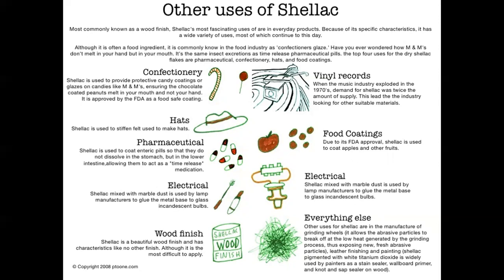In confectionery, shellac is used to provide a protective coating for candies and glazes — M&Ms are coated with it so they don't melt in your hand. Cowboy hats are also covered with shellac material because it gives a stiffened look and maintains the specific shape. In pharmaceuticals, shellac is used for coating enteric pills so that they do not dissolve in the stomach but in the lower intestine. In electrical applications, shellac mixed with marble dust is used by lamp manufacturers to glue metal bases to glass in incandescent bulbs.